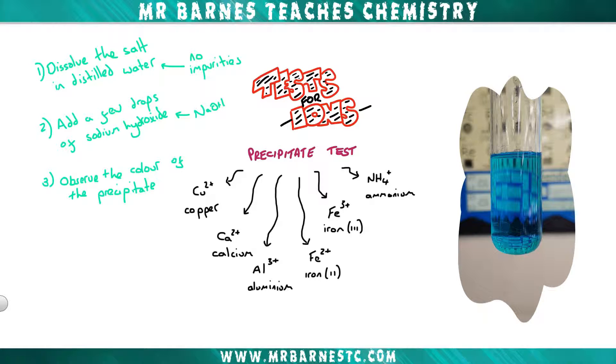Let's start off with copper then. You can see on the right hand side I have a solution of copper. If I add sodium hydroxide to it, you can now see it has made a blue precipitate.